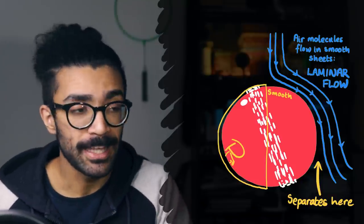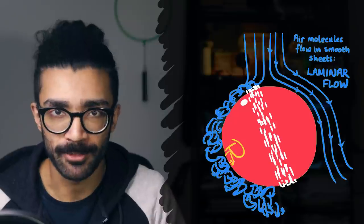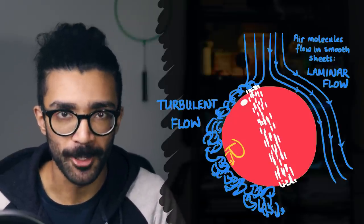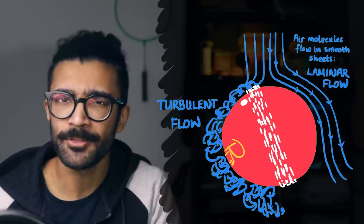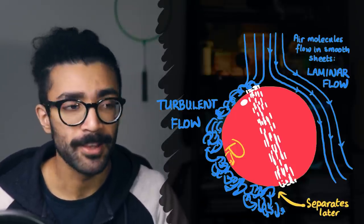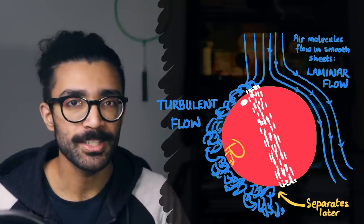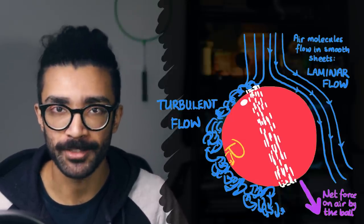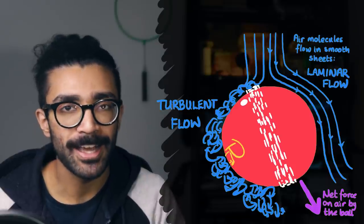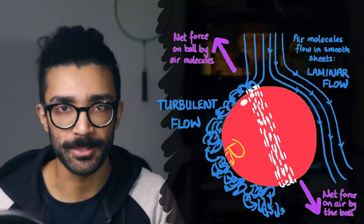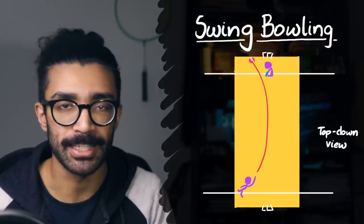Whereas if we look at the other half of the ball, the air molecules flowing in this direction are going to have to deal with the rough seam. The seam does not allow for nice smooth laminar flow. Instead what we experience is turbulent flow — basically chaotic motion where the air molecules move in lots of different directions over the ball. It turns out that this turbulent flow is actually much better at sticking to the surface of the ball, and therefore it leaves the surface of the ball much later. The net result is that the ball, as it moves through the air, causes air molecules to be shoved off in this direction. And using Newton's third law, if the ball is exerting a force in this direction on the air molecules, then the air molecules will exert a force in this direction on the ball — equal and opposite forces. This is the reason why a brand new cricket ball swings through the air, assuming the seam can be consistently kept pointing in the same direction.